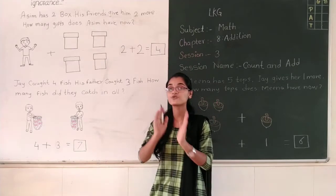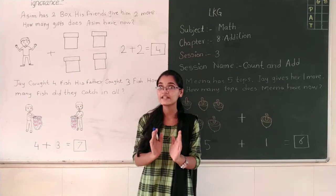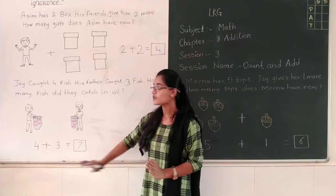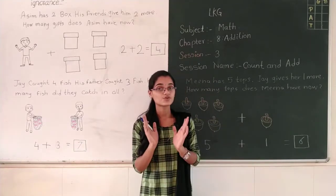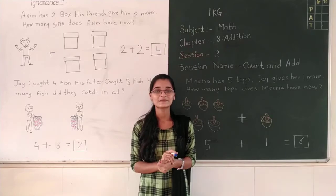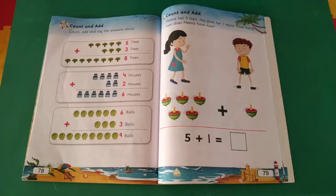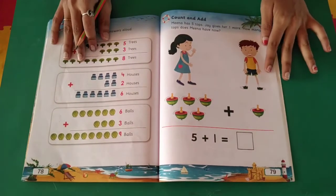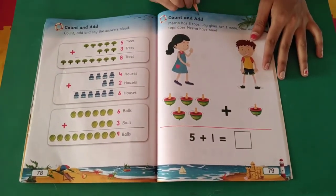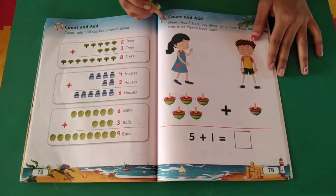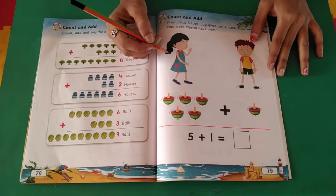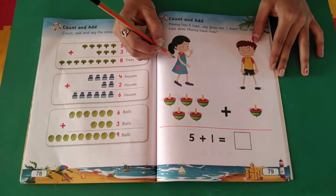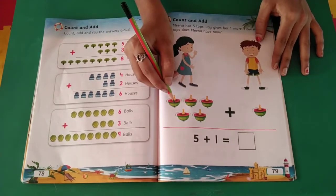Like this, students, you have to count and write the correct number in the boxes. Now I am going to show you your math textbook. Student, look here. This is your math textbook. Count and Add. Now, Meena has five tops. Her name is Meena and she has five tops. How many tops?